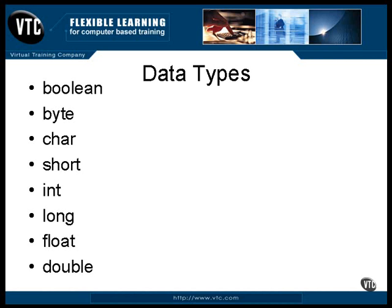For one thing, C doesn't have a boolean data type or a byte data type. Also, unlike C, the Java data types all have a fixed size — it stays the same no matter what computer system the Java program is compiled and running on. If you have a C background, you can forget about the int being whatever the native size of an integer happens to be. In Java, an int is always 32 bits long.